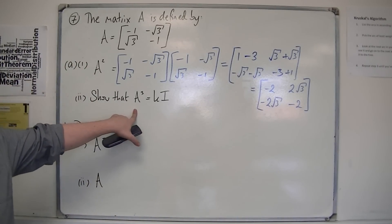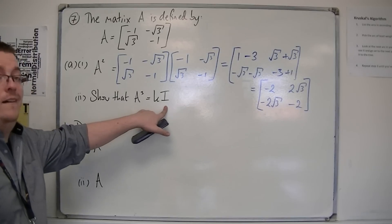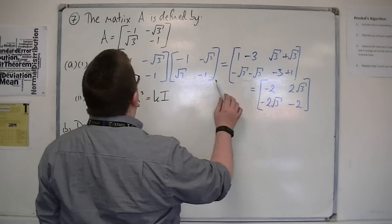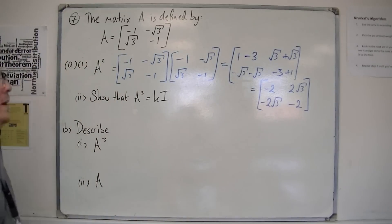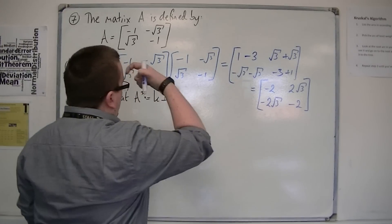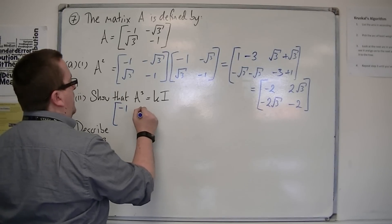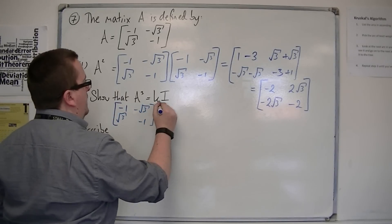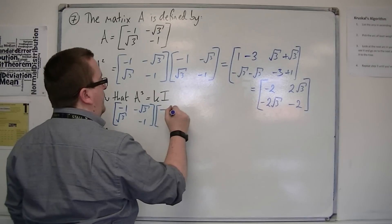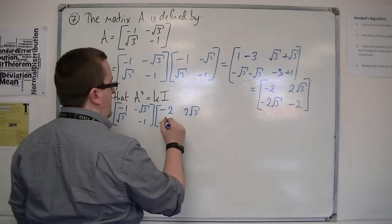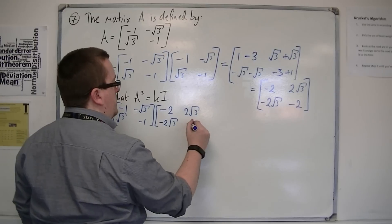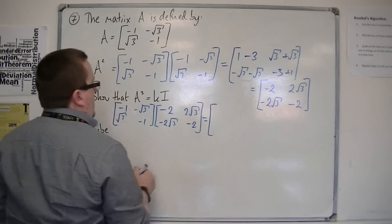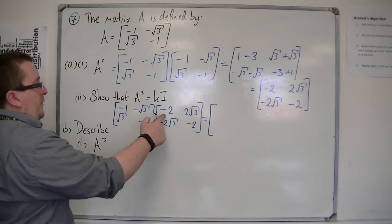We're then asked to show that A cubed is equal to Ki, where I is the identity matrix. So we're going to need to multiply A by our A squared. So, we're going to have minus 1, minus root 3, root 3, minus 1, multiplied by our A squared, so minus 2, 2 root 3, minus 2. Right, what are we going to have here? We're going to have minus 1 times minus 2 is 2.